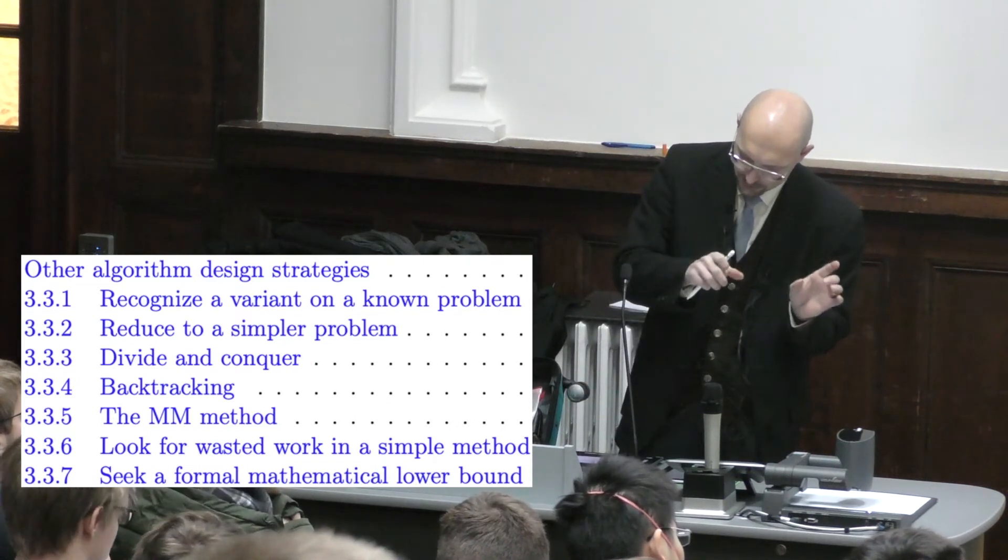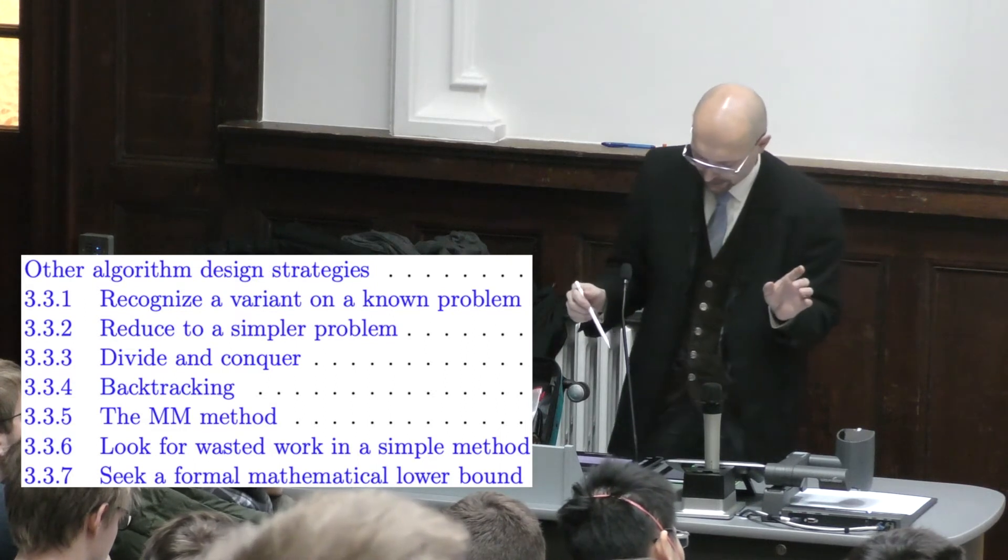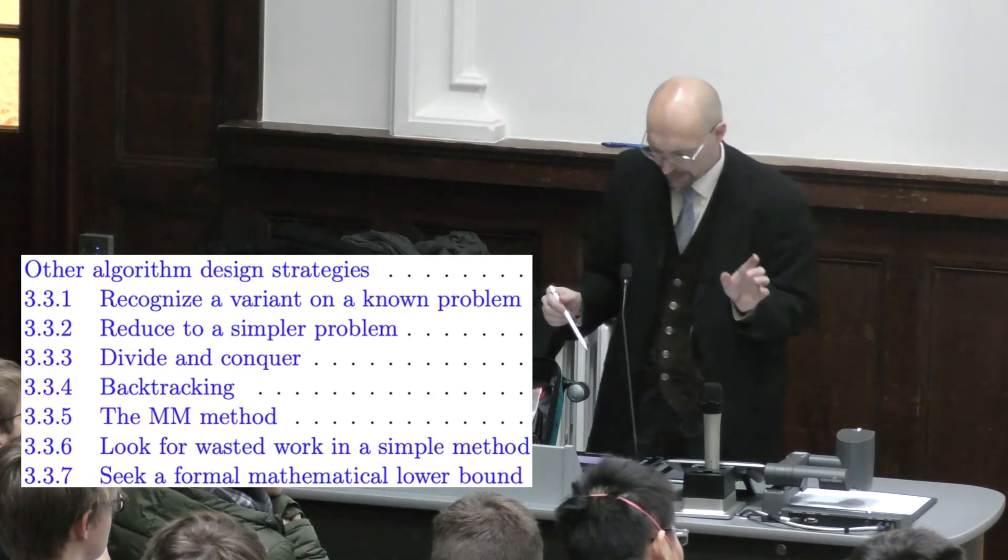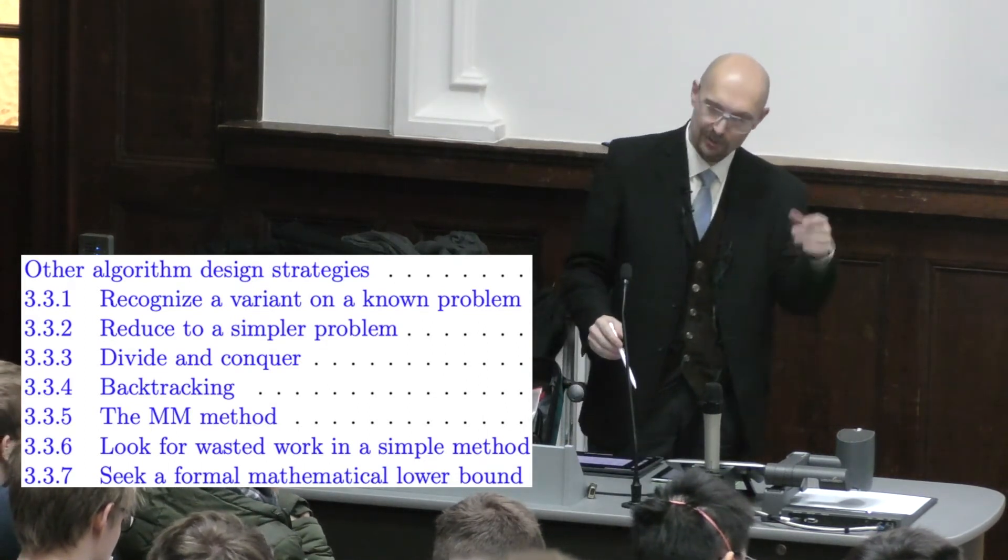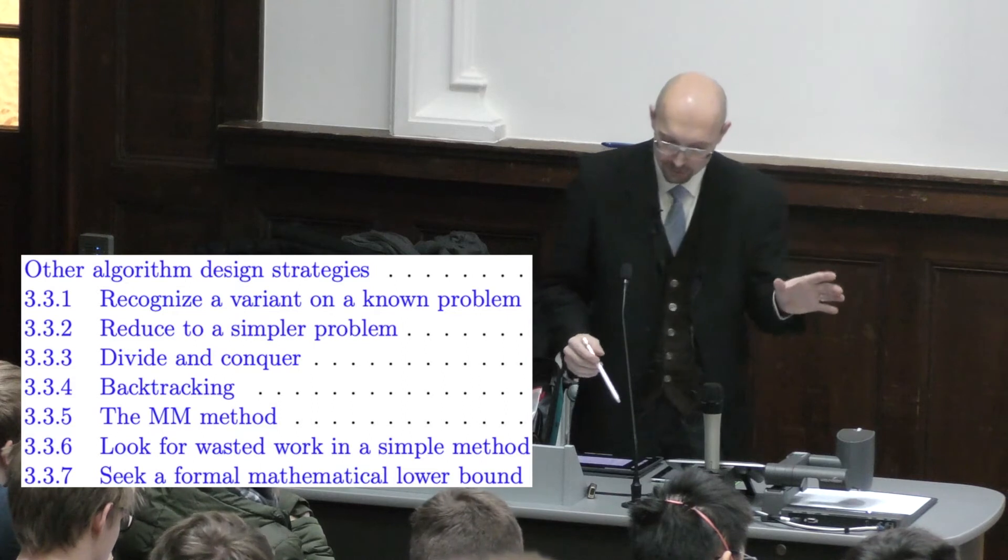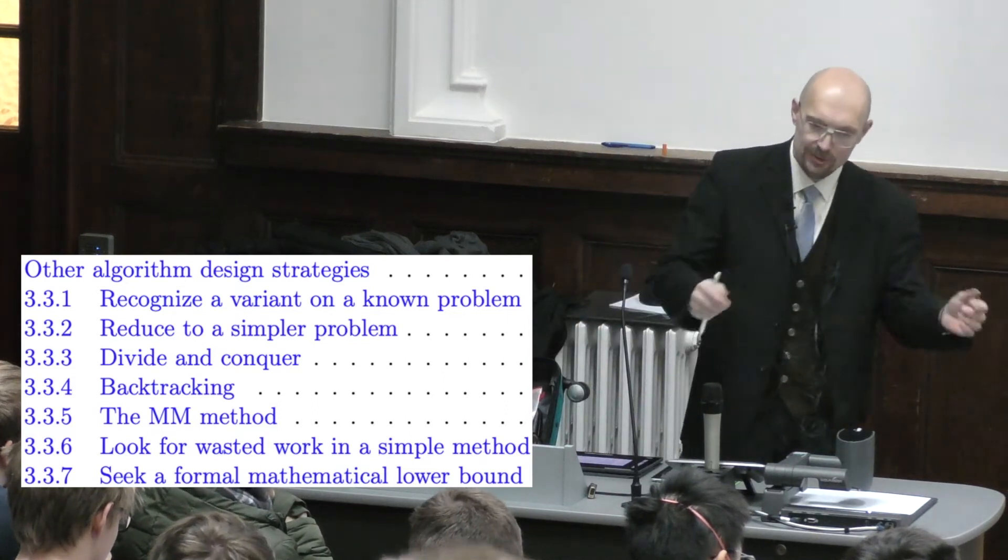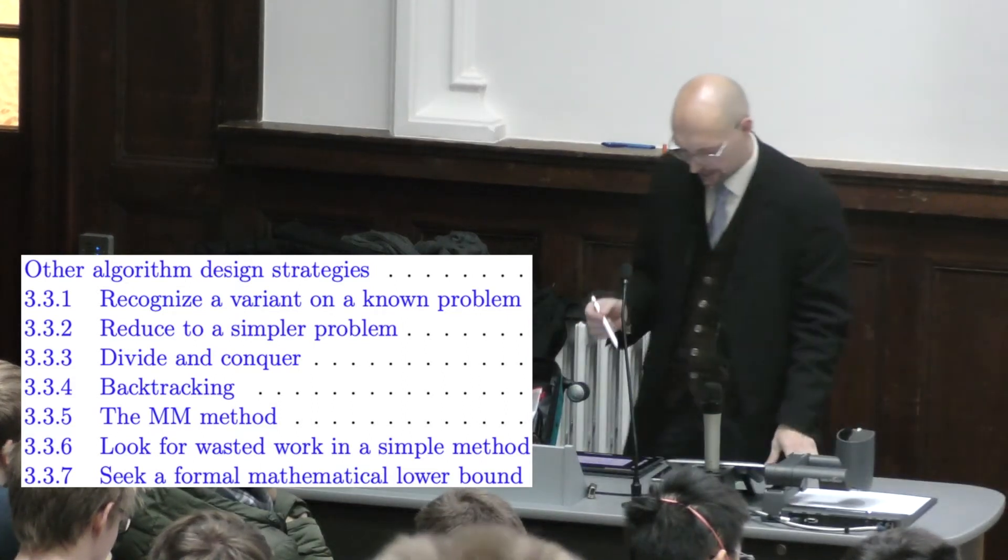I think the subtle distinction made here is that with divide and conquer, once you've divided into small things you're done. But in quick sort, once you've divided the individual parts and conquered them it's finished. In merge sort, once you've divided into small things you still have to do a recombination step after that.